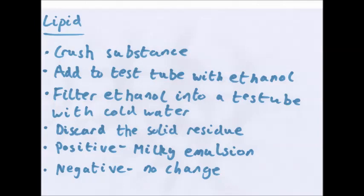Lipid: crush the substance, add it to a test tube with ethanol, then filter the whole test tube including the ethanol into another test tube with cold water. Discard the solid residue — two layers will form. If a layer with a milky emulsion forms, it's positive; no change is negative. One thing you might be asked: why can't you do this test on milk? Very simple — milk is white, so it'll be hard to tell if it's positive or not.